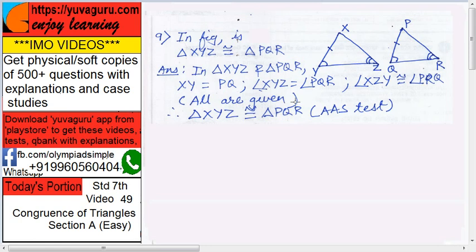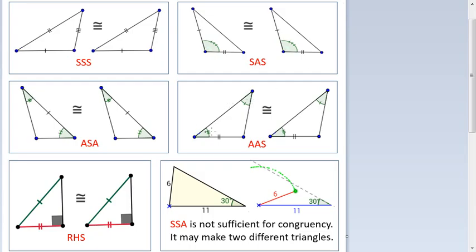So, all are given over here. Therefore, triangle XYZ congruent to triangle PQR by AAS test, AAS test. A, A and S, right?